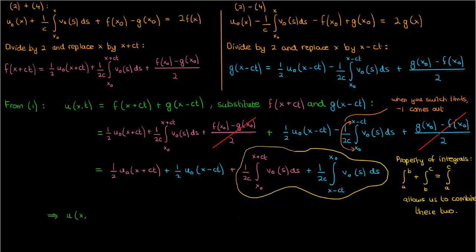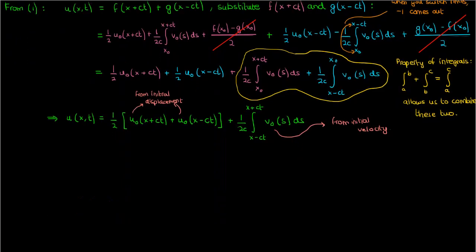u of x comma t equals 1 half of u0 of x plus ct plus u0 of x minus ct plus 1 over 2c times the integral from x minus ct to x plus ct of v0 of s ds. Where u0 of x and v0 of x are the initial displacement and initial velocity respectively, which we specified at the start of the problem.